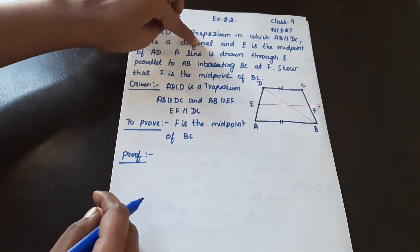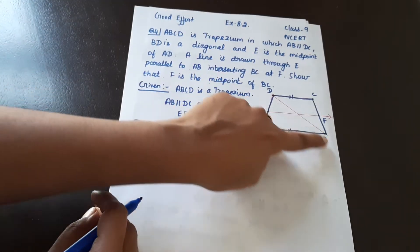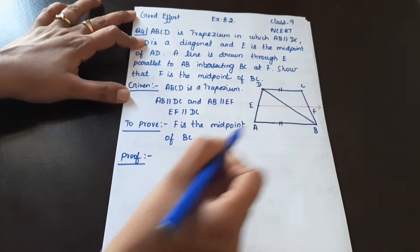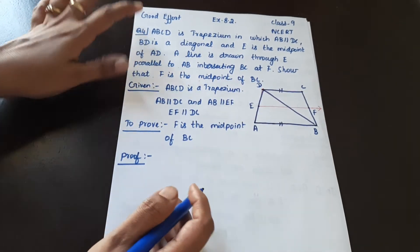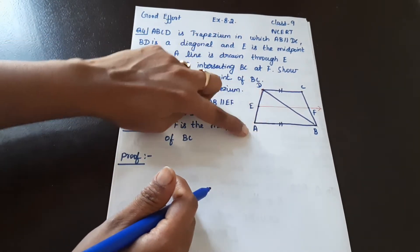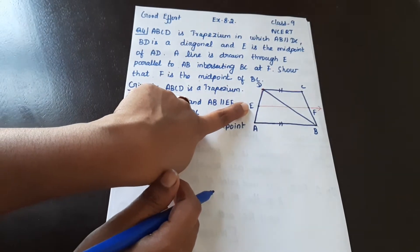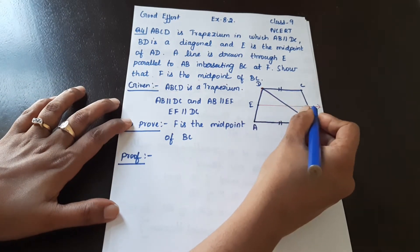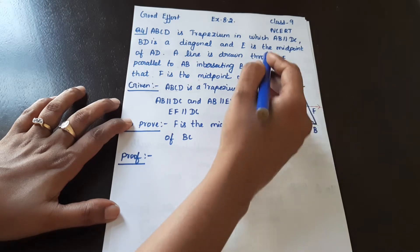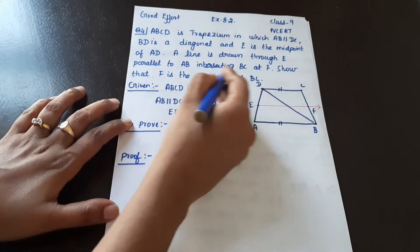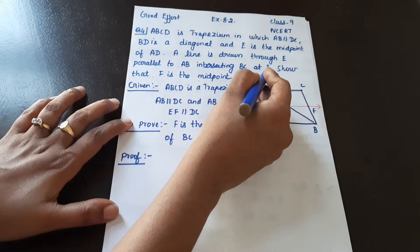BD is the diagonal. E is the midpoint of AD. A line is drawn through E, parallel to AB, intersecting BC at F.